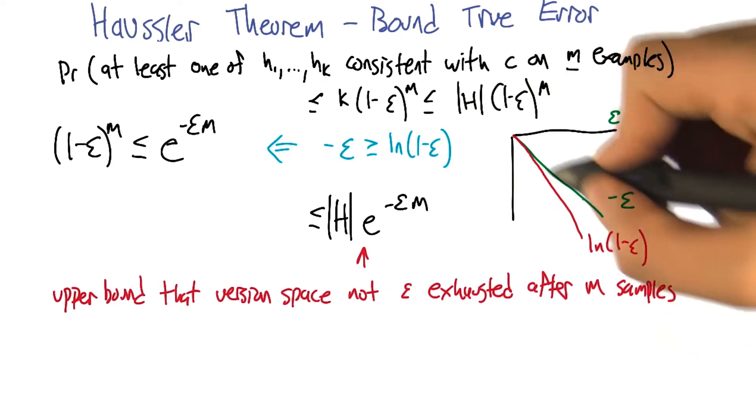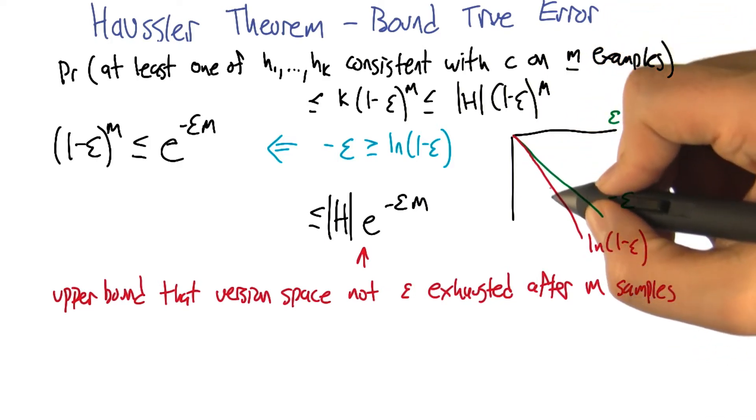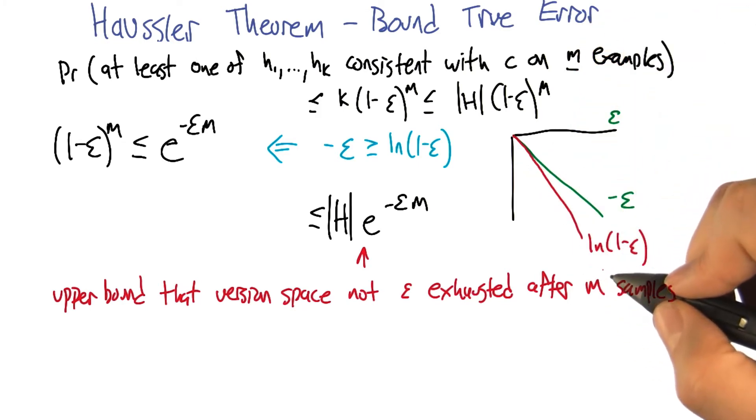And then what happens is it starts to fall away from it. The slope is actually, you can test this by taking the derivative of it, but the slope is monotonically changing in this way so that it falls away from the line. It always stays below it.